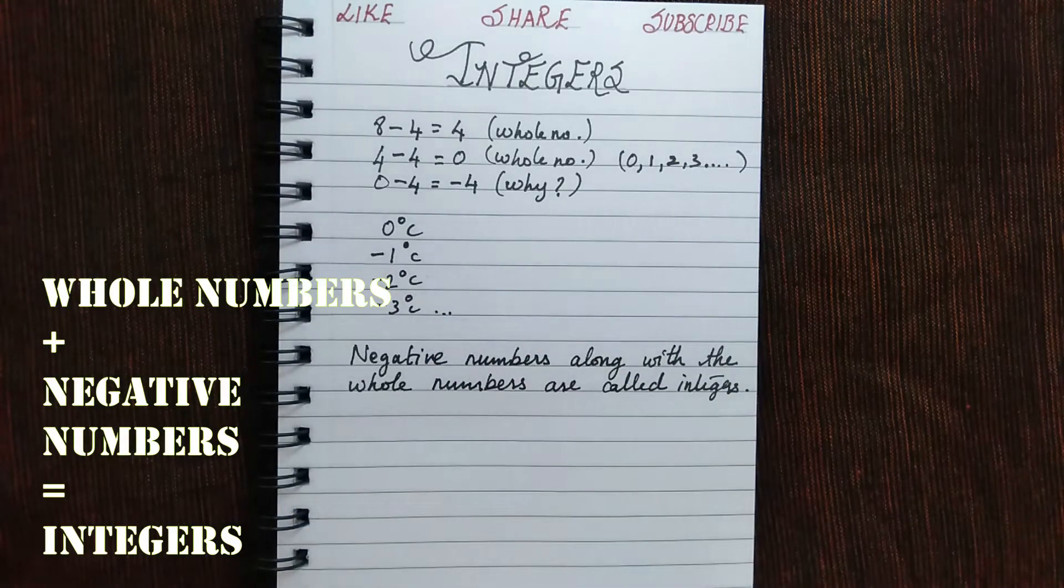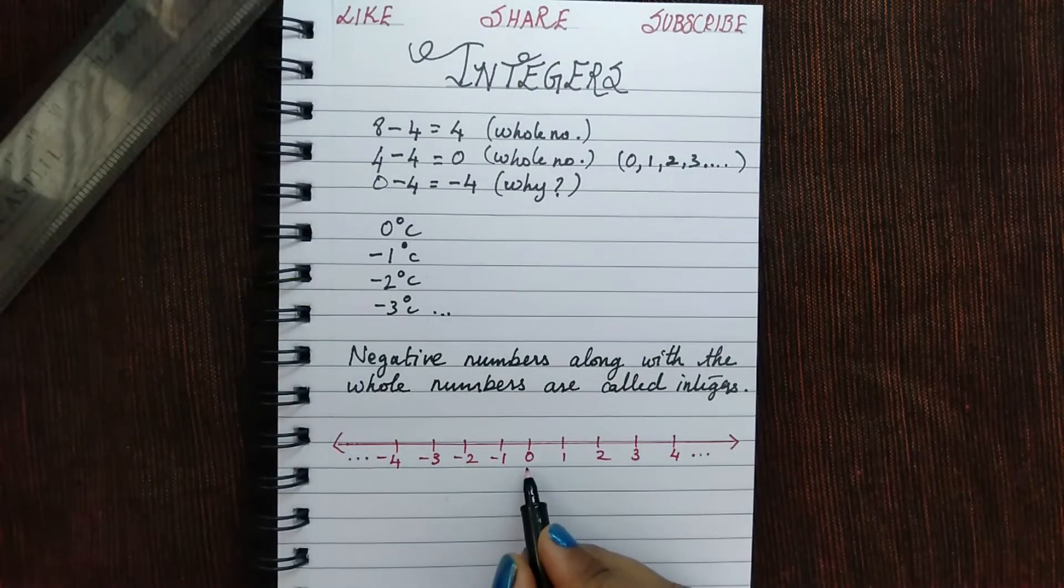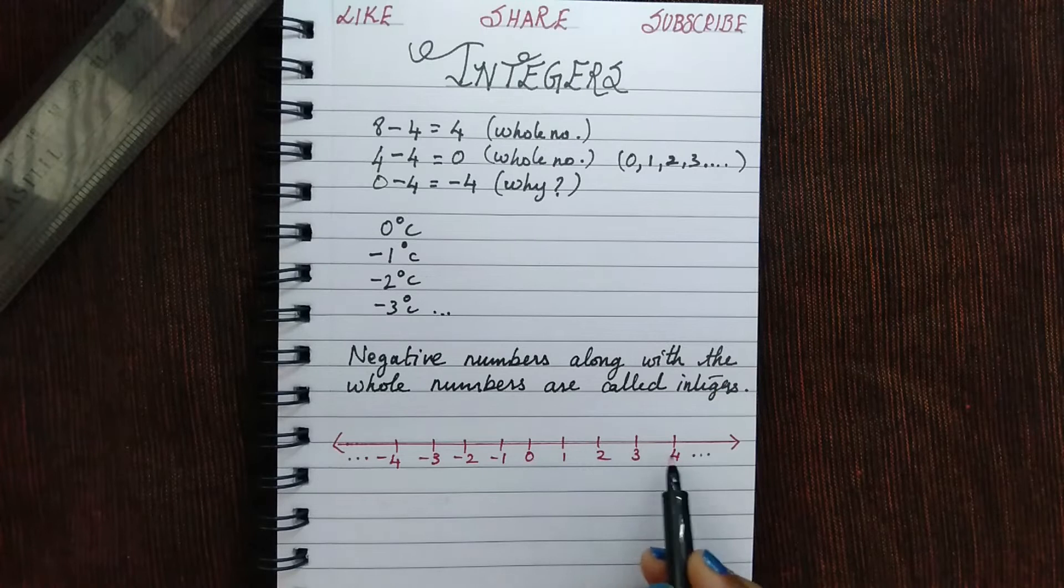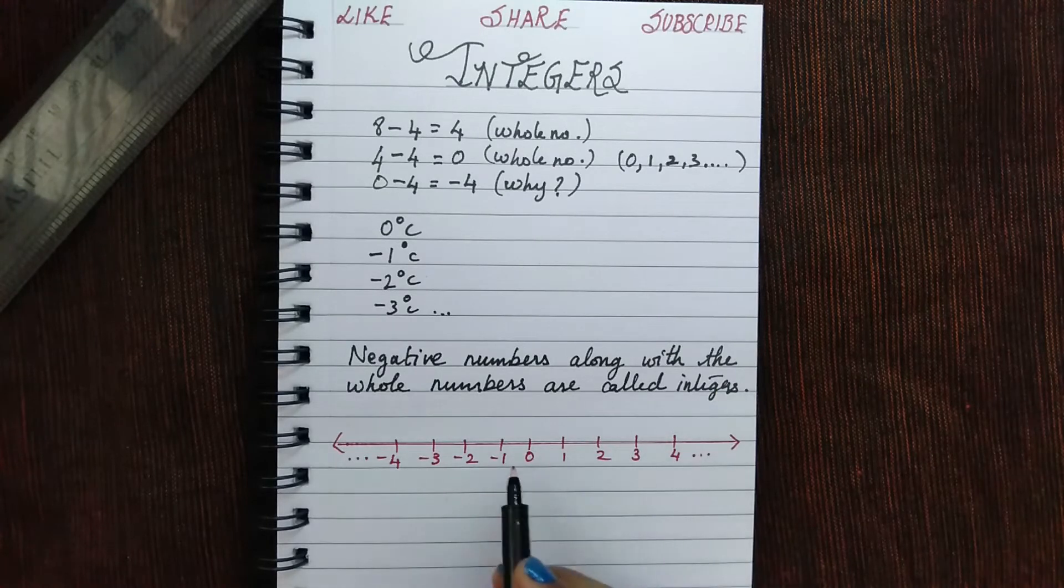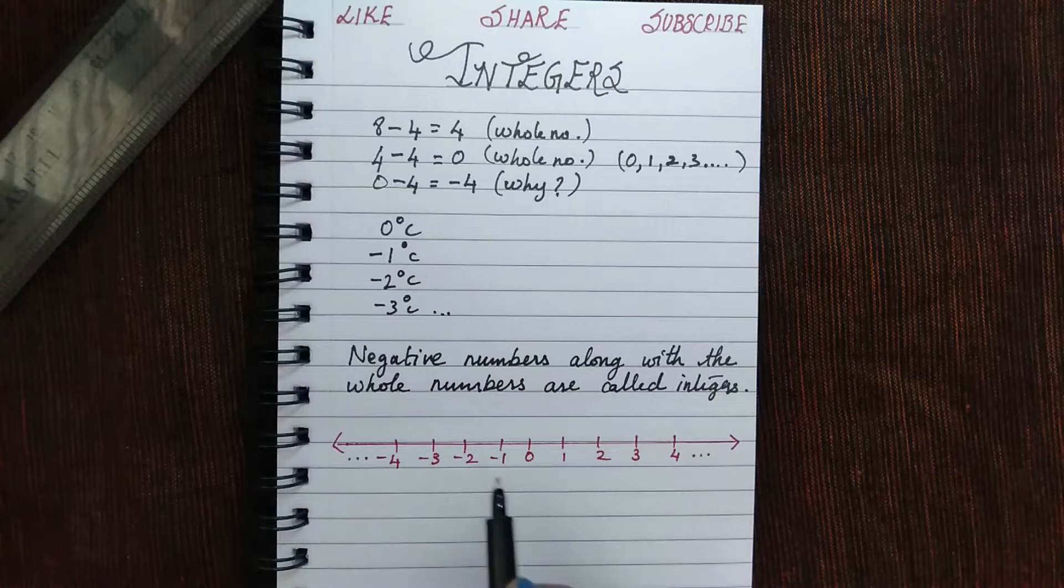Now let's represent these integers on a number line. Here is the 0, and the number goes in increasing order towards your right, and the numbers go in decreasing order towards your left.